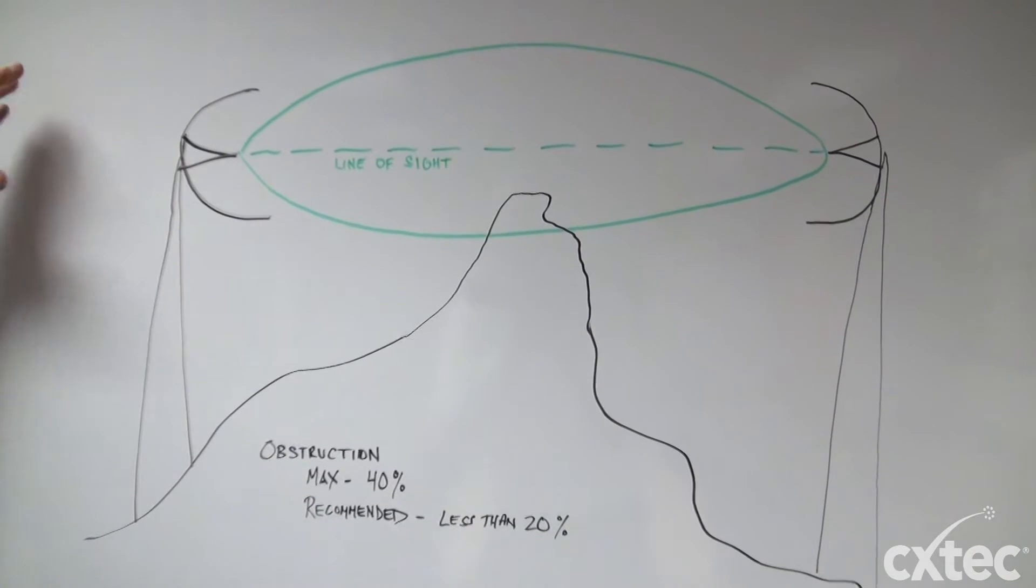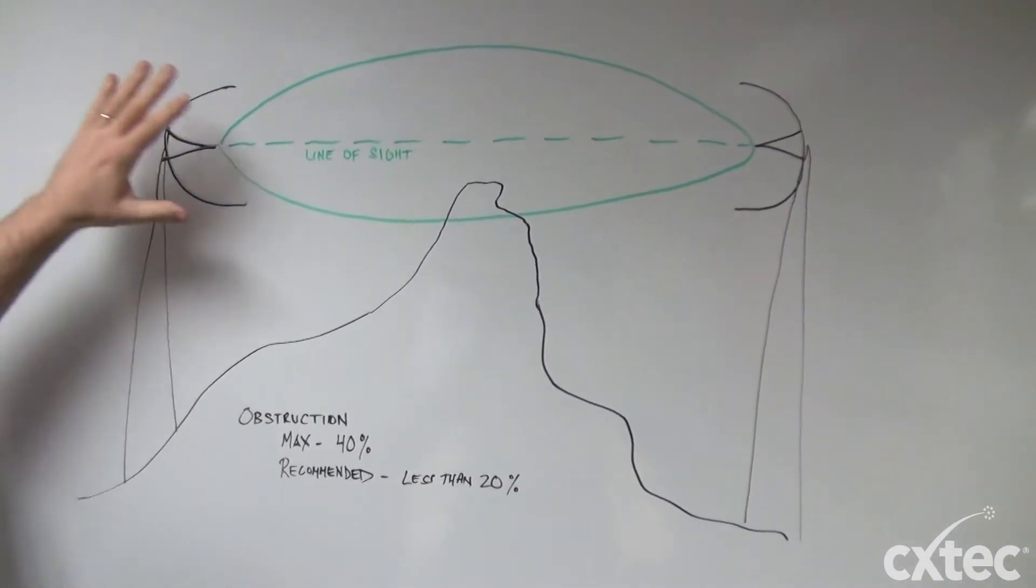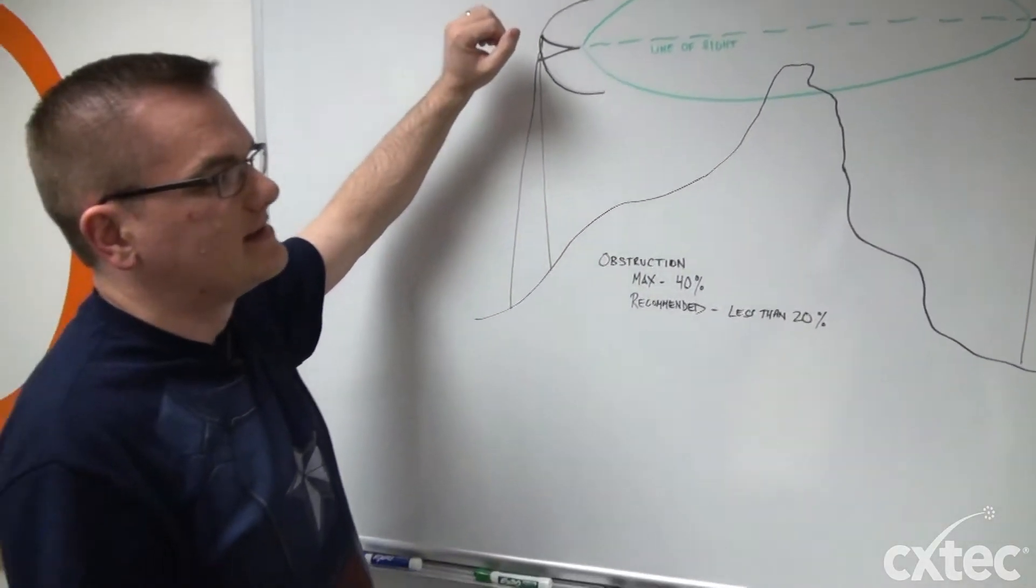Not really a big deal as long as those antennas are high enough to accommodate that signal widening. But what tends to happen is that between two bridged antennas, there will be obstructions. Now that's not the end of the world.